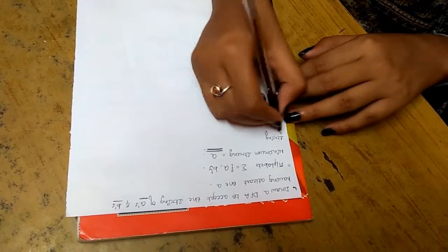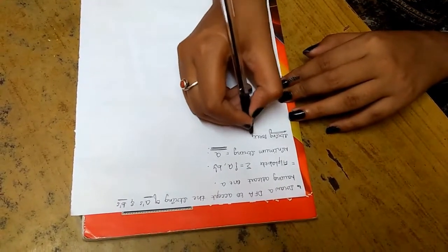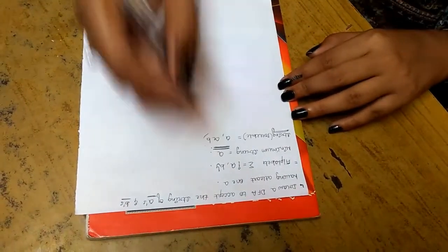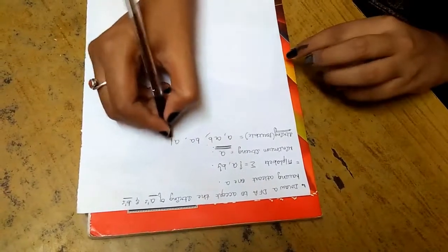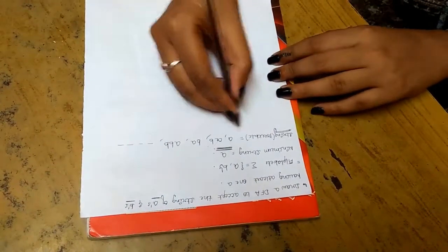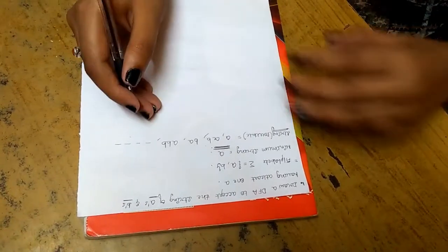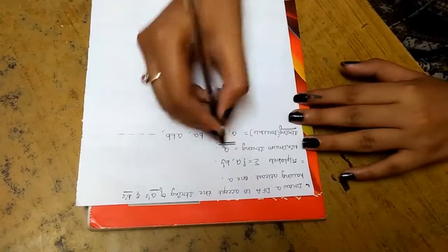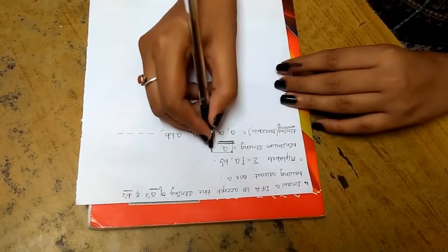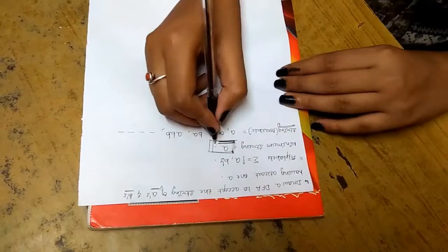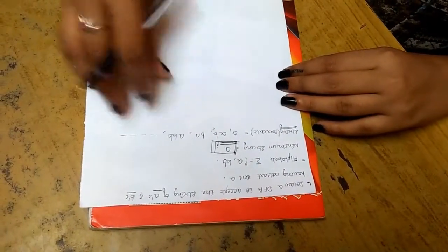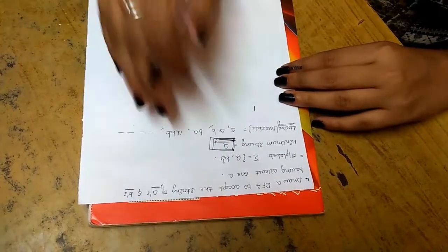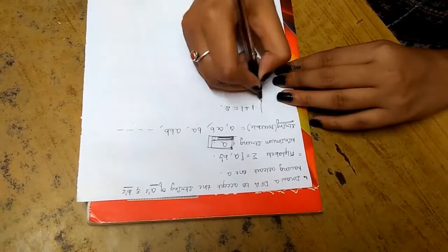The possible strings that have at least one A can be: A, AB, BA, ABB, and so on. One major important trick while designing a DFA is: if the minimum string is of only one character, then the number of states will be 1 plus 1, that is 2.